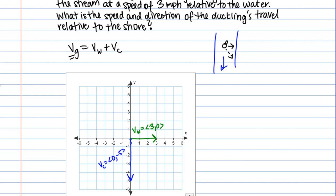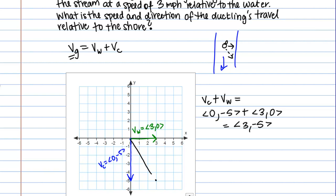Now we want to add these vectors component-wise to get the velocity relative to the ground. So Vc + Vw: Vc was (0, -5) and Vw was (3, 0). Adding those gives the vector (3, -5). Sketching that on the picture, it looks like what we were expecting — this is the velocity of the duckling relative to the ground.